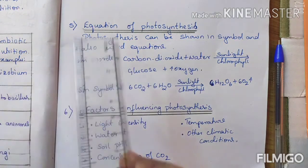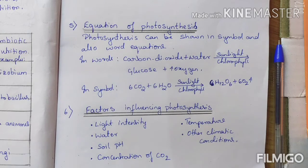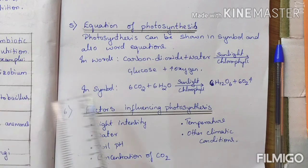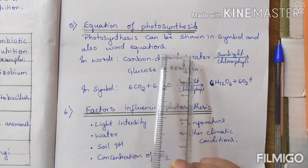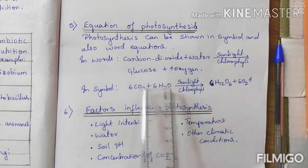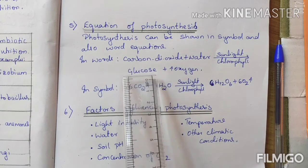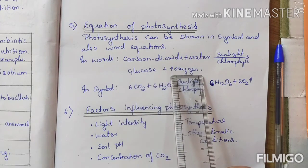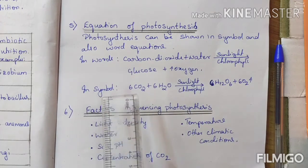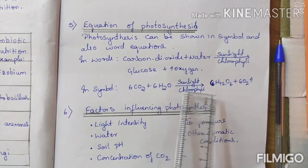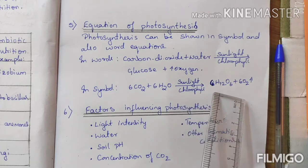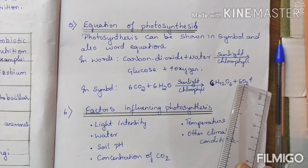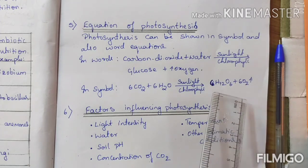Now the equation of photosynthesis. Till now we learned what is photosynthesis, its importance, and what things are involved. Photosynthesis can be written in the form of words and also as symbols. In words: carbon dioxide plus water, in the presence of sunlight and chlorophyll, gives the product glucose — which is food for the plant — and releases oxygen. In symbol form: 6CO₂ + 6H₂O, in the presence of sunlight and chlorophyll, gives C₆H₁₂O₆ + 6O₂, which is the liberation of oxygen.